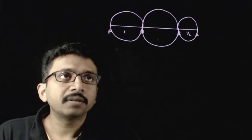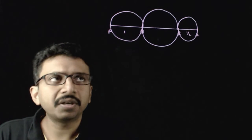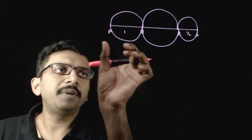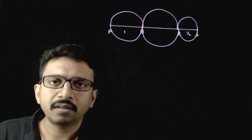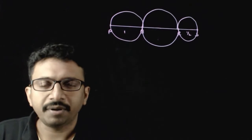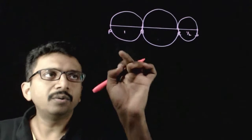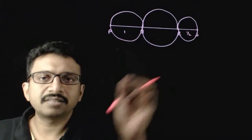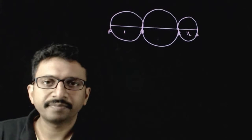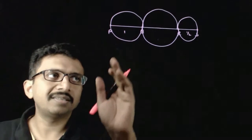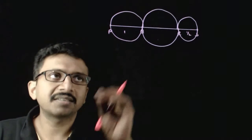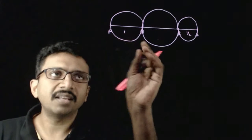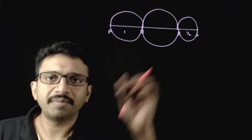Welcome students. In this question, you are given that PQRS is a common diameter to three circles — that is, there are three circles along the same diameter.